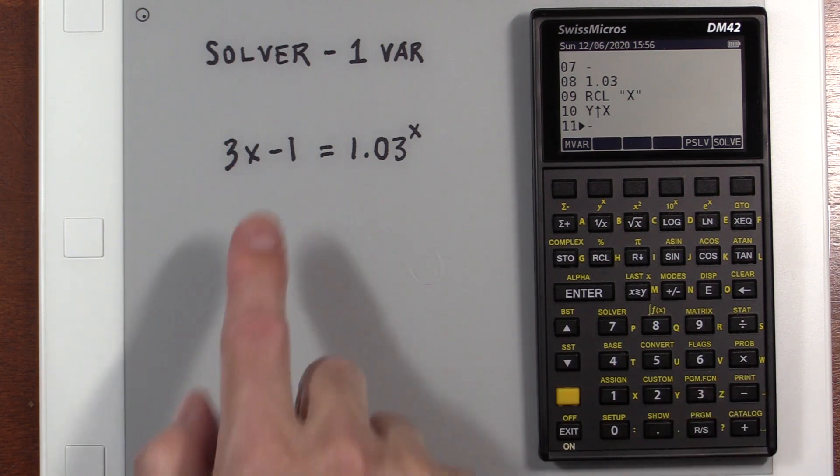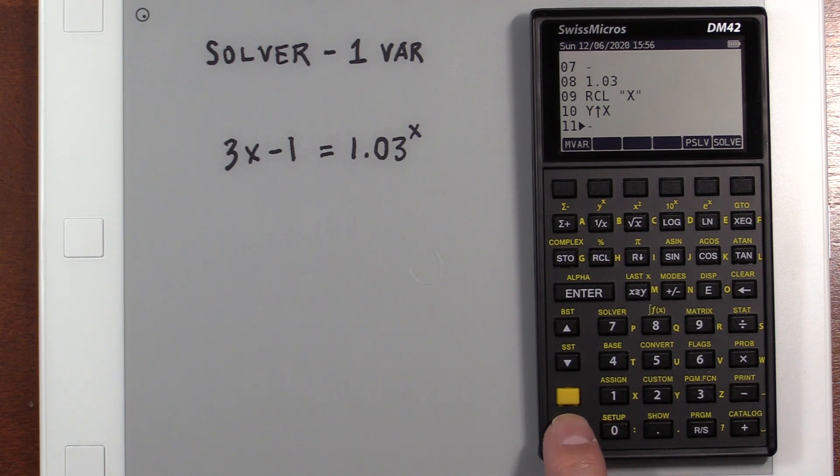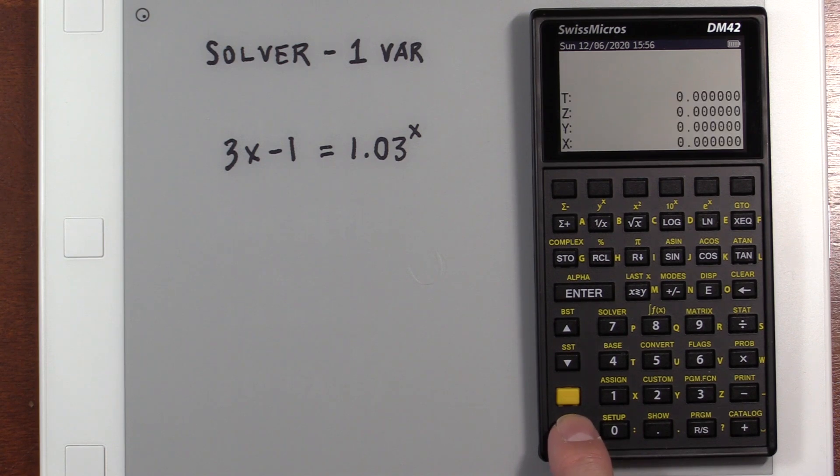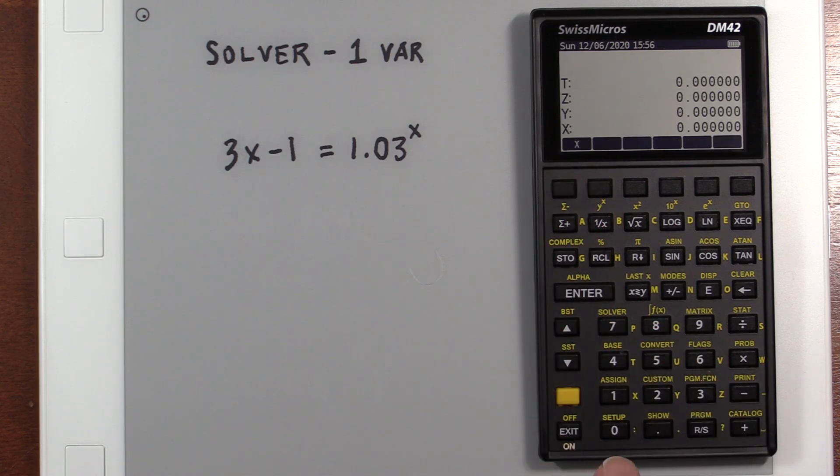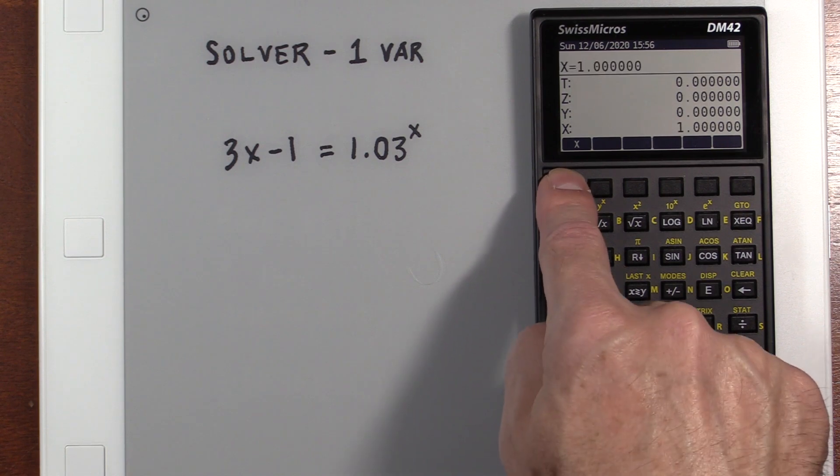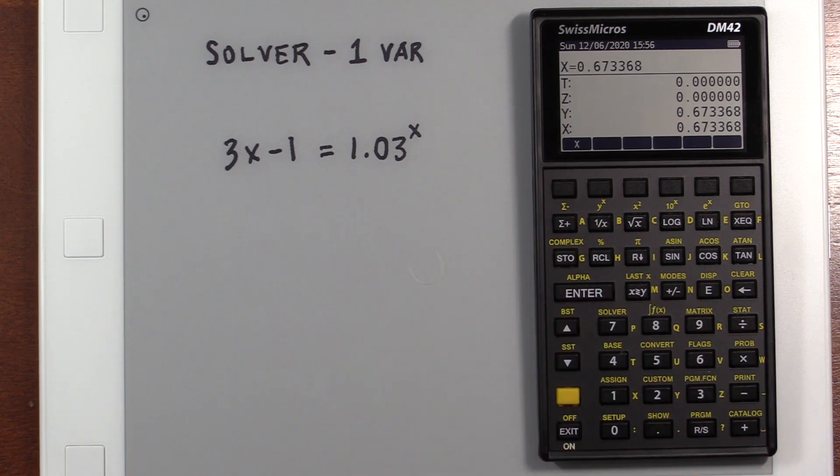and that will be subtracted from what we already had. So now everything's on this side equal to zero. Hopefully you can visualize that. We then exit, and we go into solver. We tell it we want to use this dot TMP that we just made. And what's our starting value? Let's just say 1. Give it a start, and you hit X again, and it finds the solution.